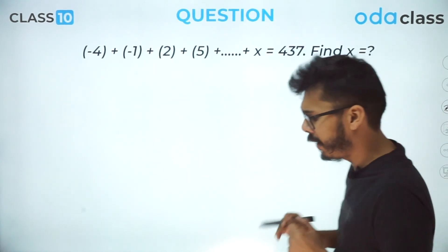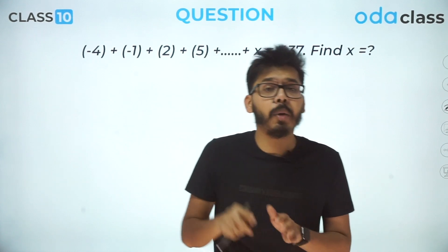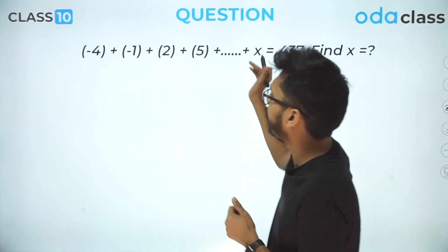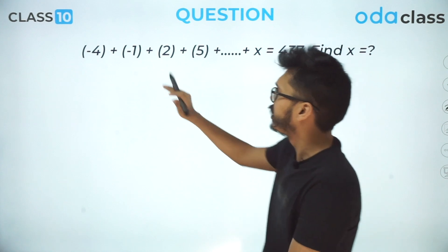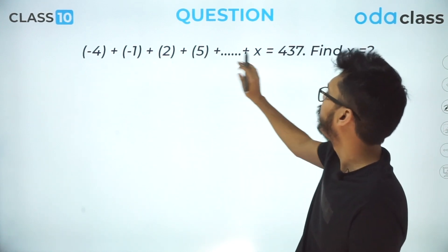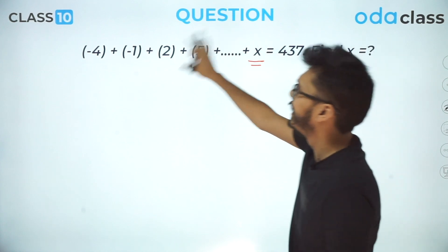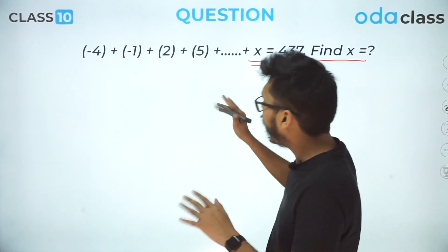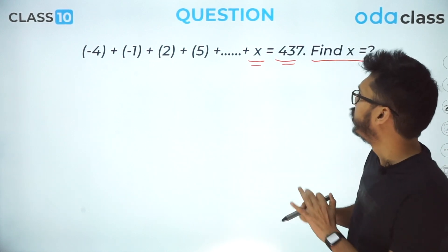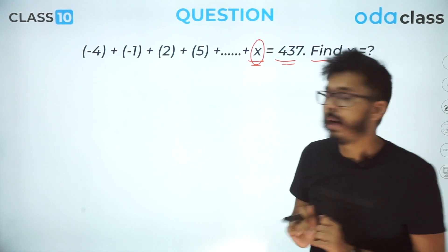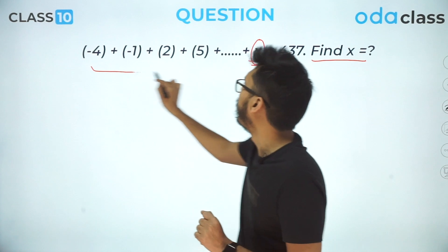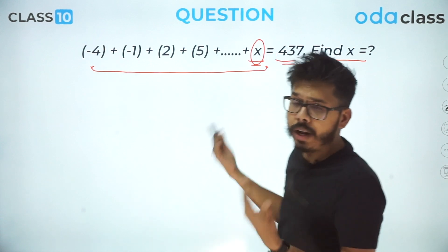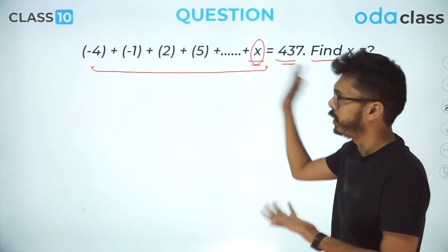The first question deals with the nth term as well as sum of n terms. The series given is −4, −1, 2, 5, … up to x, and the sum comes out to be 437. We need to find the value of x. There are two unknowns: x, which we need to find, and the number of terms we are taking, which is also unknown.